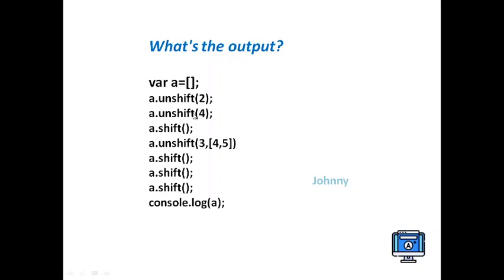Next, a.unshift(4) gives us [4,2]. Then a.shift() removes the element at the beginning of the array. So the 4 element will be removed.